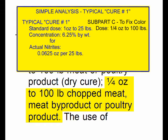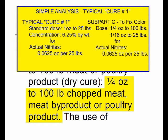Dividing by 4, we get a sixteenth of an ounce to 25 pounds — 0.0625 ounce for 25 pounds. So I think we can conclude that if we use the American style Cure Number 1, which is 6.25%, we'll get compliance with the American law for the purpose of fixing the color.